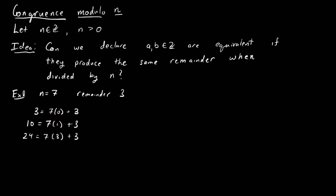If I look at the integer negative 11, well, this is just 7 times negative 2 plus 3. So we can see that all of these numbers have a remainder of 3 when I divide them by 7.